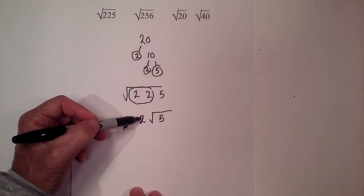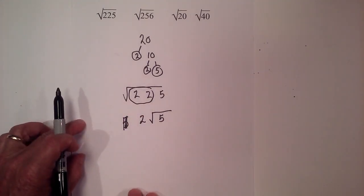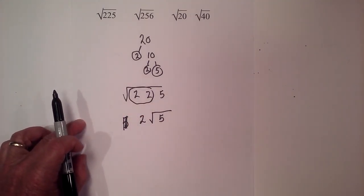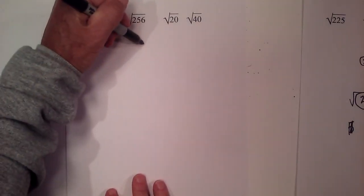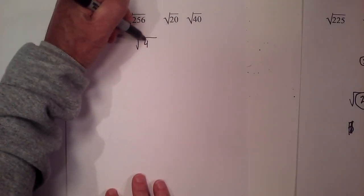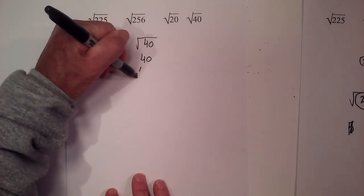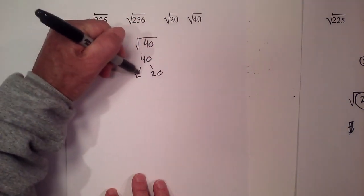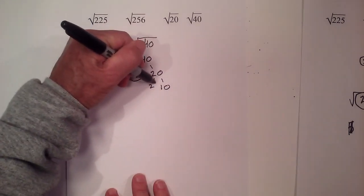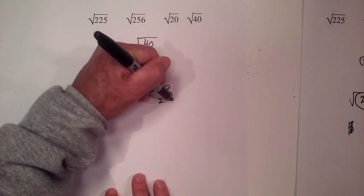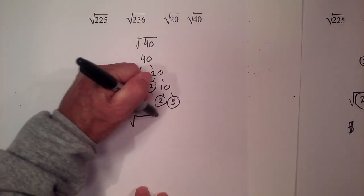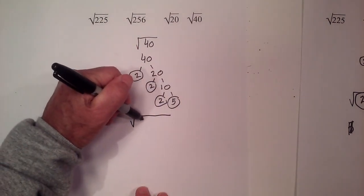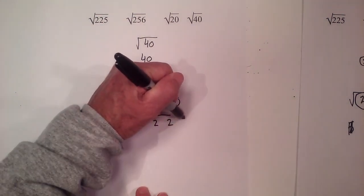Okay, now we have the square root of 40. Again, for the square root of 40, I'm going to start with a factor tree: 2 times 20, circle the 2, 2 times 10, circle the 2, 2 times 5, and I'm down to prime numbers. Now I'm going to rewrite 40 under the radical sign as 2 times 2 times 2 times 5.